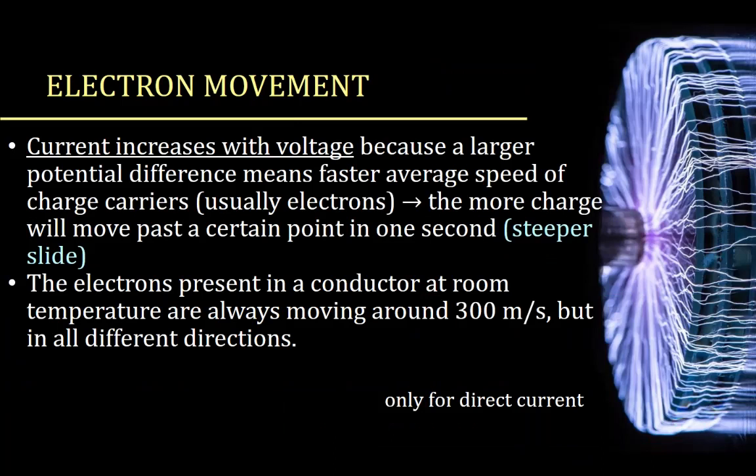Current increases with voltage because a larger potential difference means faster average speed of the charge carriers — typically electrons — so more charge moves past a certain point in one second. Think about it like a slide: the steeper the slide, the faster you go down because you're using more gravity. The bigger the voltage gap, the faster the electrons run, which means more current. The electrons present in a conductor at room temperature are always moving at around 300 meters per second, but in all different directions. This only applies to direct current — we have to think differently for alternating current.